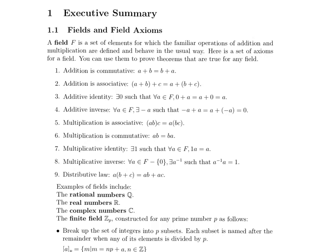A field is a set of elements for which the familiar operations of addition and multiplication are defined and behave in the usual way. You have been working with fields for over 10 years now. The real numbers are a field. We're going to go through some other examples of well-known, commonly used fields later, but first let's talk about the nine axioms for a field. An axiom is a basic premise. These are the nine properties of fields.